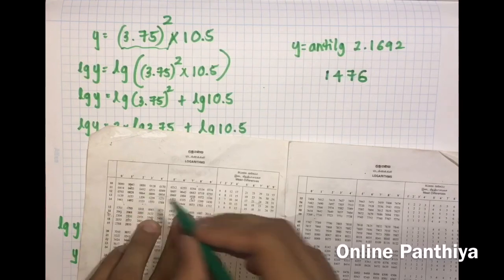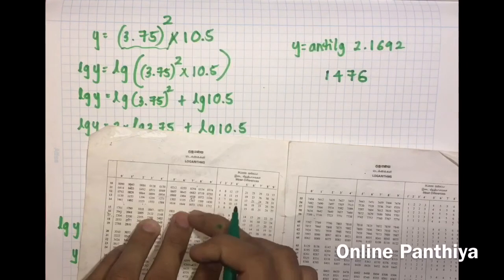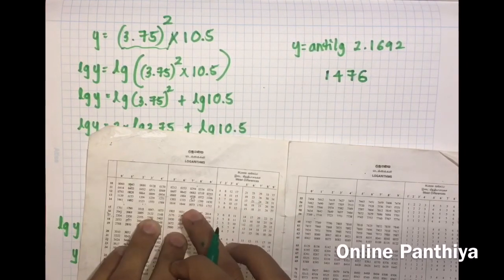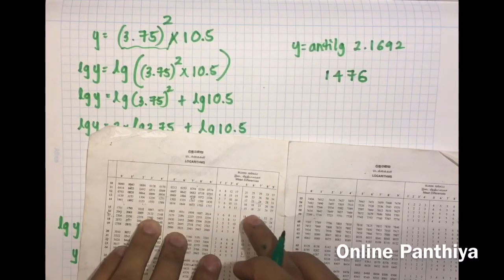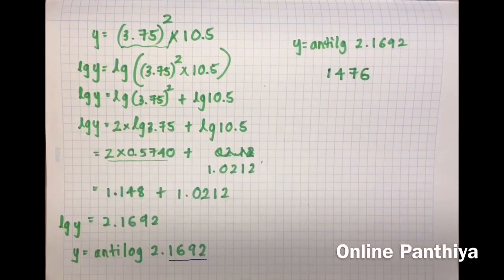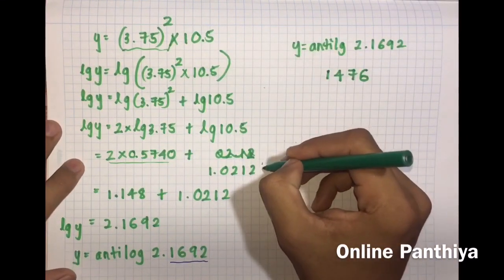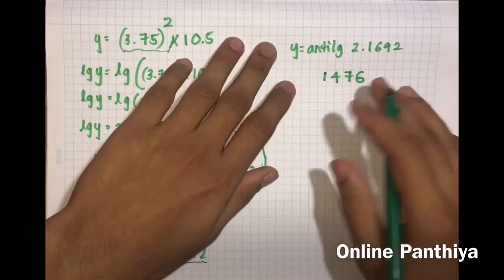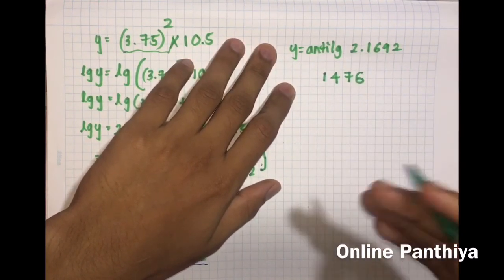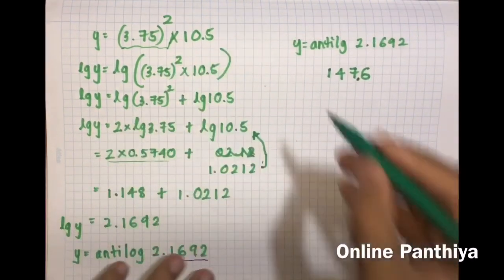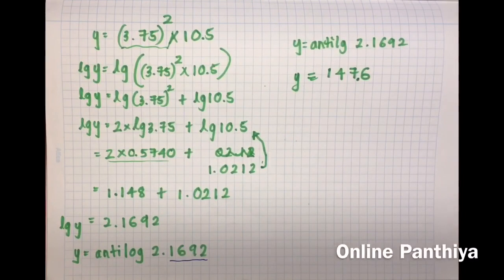So you write row 14, column 7, giving 147, then append 6 to get 1476. The number before the decimal was 2, meaning in the actual answer the decimal is placed after three numbers. Therefore y equals 147.6. This is just a revision. In grade 11 there is a small advanced topic about bar numbers. Subscribe to our channel — we'll be updating it soon. Thank you for watching.